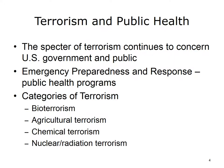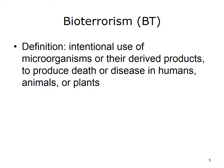Concern over terrorism continues in the U.S. Public health has responded by forming emergency preparedness and response programs. There are four main categories of terrorism: bioterrorism, agricultural terrorism, chemical terrorism, and nuclear or radiation terrorism. Bioterrorism is defined as the intentional use of either microbes or their derivations to produce death or disease. The target of bioterrorism may be humans, animals, or plants.